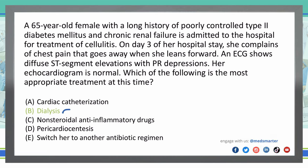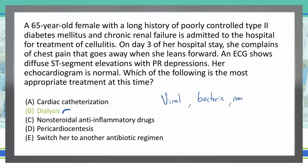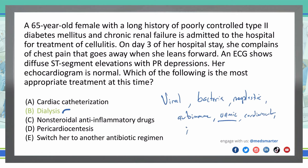What else can cause pericarditis besides chronic renal failure and uremia? Viruses — coxsackievirus, echovirus, adenovirus, and HIV — can all cause pericarditis. Bacteria such as tuberculosis, Streptococcus pneumoniae, or Staph aureus (often in the context of endocarditis, pneumonia, or post-cardiac surgery) can also be responsible. It can be neoplastic, autoimmune, uremic — which is our case here — cardiovascular, or idiopathic, meaning the cause is unknown. Treatment for uremic pericarditis specifically is dialysis.